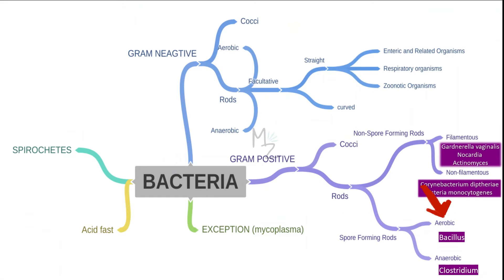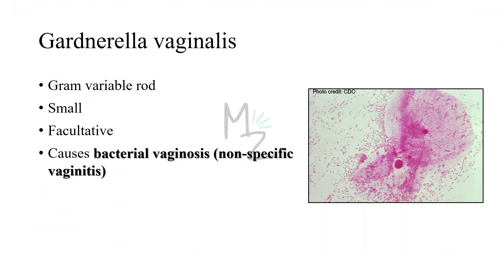Spore-forming rods include aerobic, for example Bacillus, and anaerobic, for example Clostridium. Gardnerella vaginalis is a small, facultative gram-variable rod. The term gram-variable refers to the observation that some organisms are purple while others are pink in gram-stained specimens. Structurally, Gardnerella has a gram-positive cell wall, but the wall is thin, and in older organisms they tend to lose it.